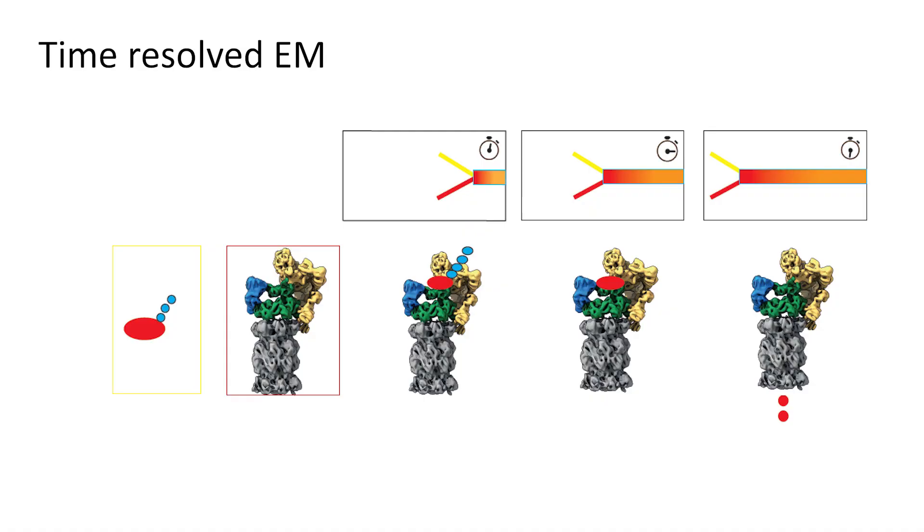So the only thing we have to solve is we have to be faster in mixing and applying the sample to the grid. And this we do in a quench flow or stop flow kind of fashion in which we have a microfluidic chip or another kind of device. Where we mix the substrate and the proteasome and add different delays after mixing before we apply it to the grid.